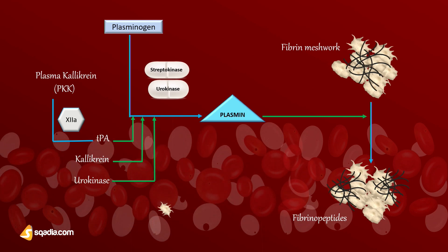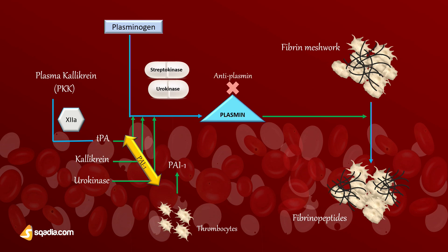As an inhibitor, activated platelets or thrombocytes release plasminogen activator inhibitor, or PAI-1. This inhibits the conversion of plasminogen to plasmin and thus temporarily blocks fibrinolysis. Additionally, anti-plasmin is an endogenous inhibitor of fibrinolysis, and plasmin itself is inactivated by anti-plasmin.